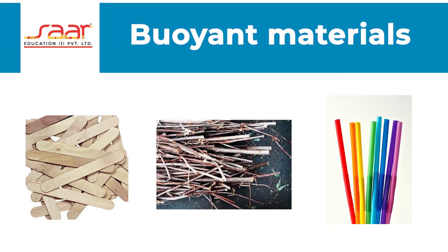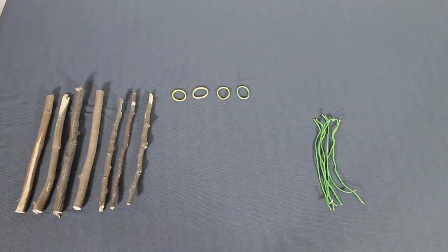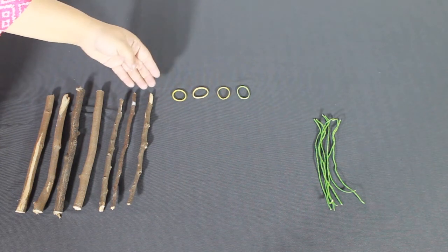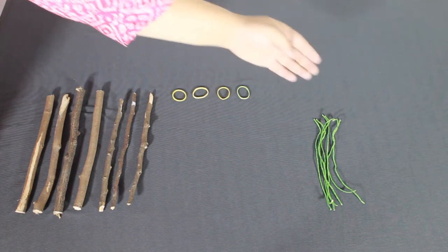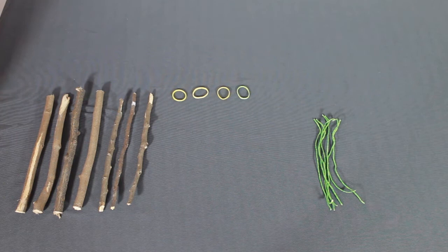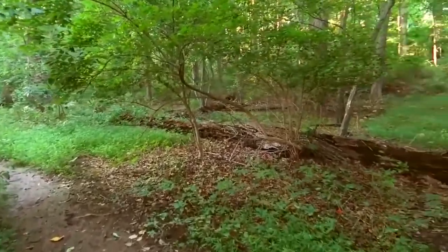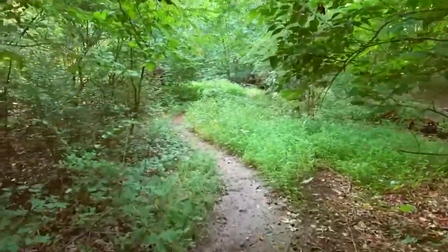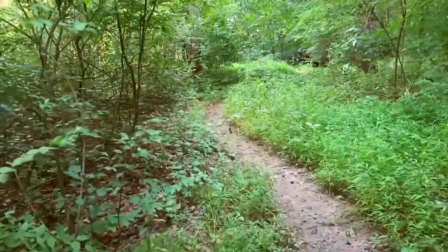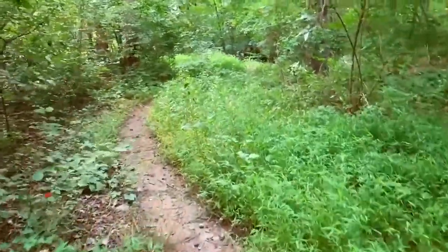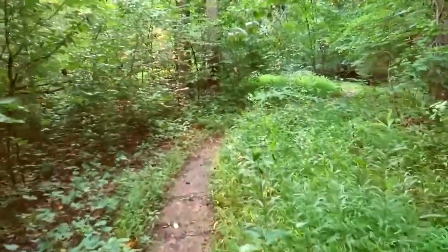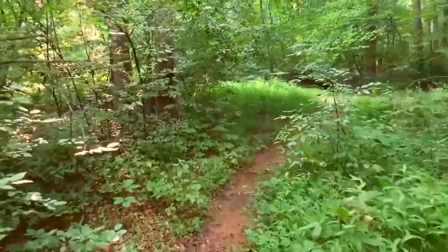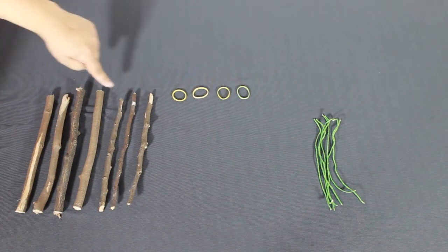Let us try making our frame with twigs. We will need the following materials: rubber bands, strings, and seven to eight twigs. We have collected a few twigs from our nature walk. Ensure that an adult accompanies you for your walk to collect the twigs. Also, do not break branches from the trees. Use the ones that have fallen on the ground.